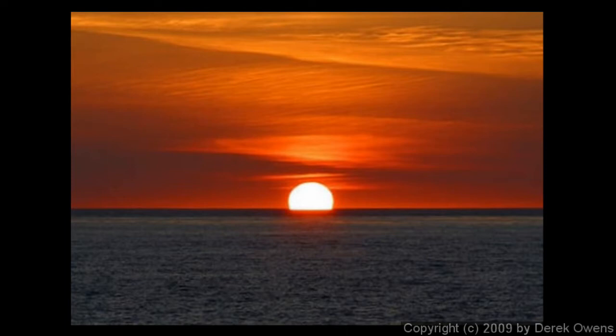So everything in the solar system orbits the Sun, and the Sun is by far the largest object in the solar system. In fact, 98.6% of the mass of the entire solar system is in the Sun.